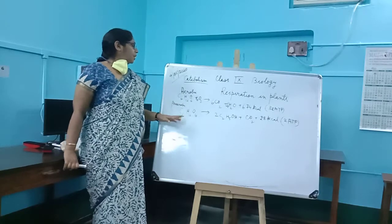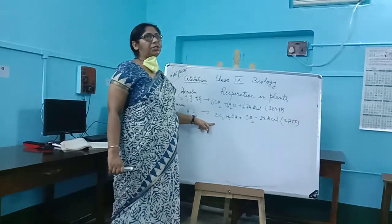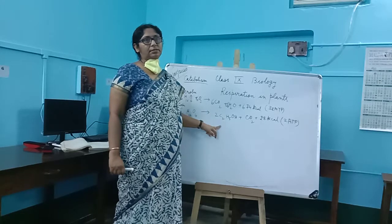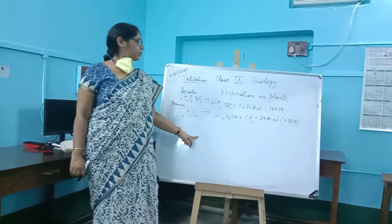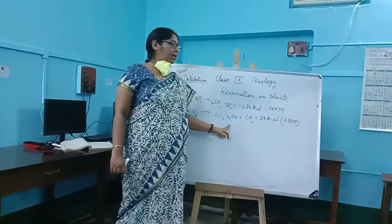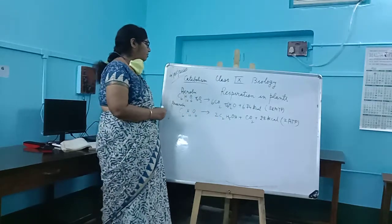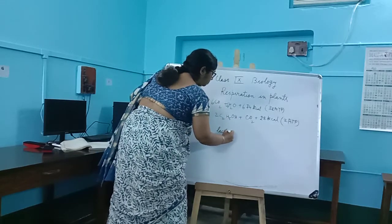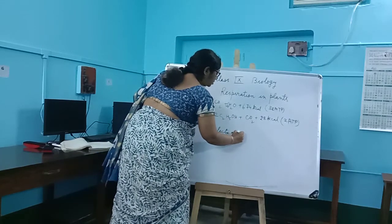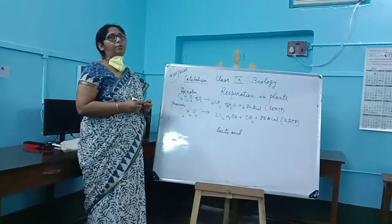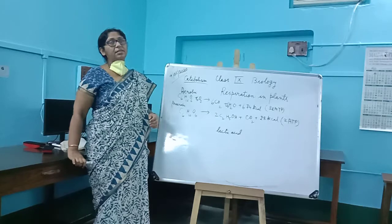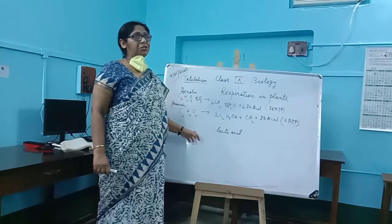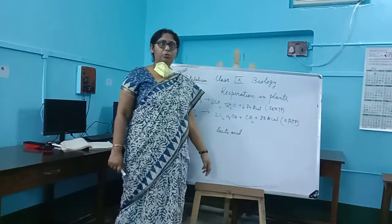The product C2H5OH (ethyl alcohol) is formed in the case of plants during anaerobic respiration. In the case of animals, in place of ethyl alcohol, lactic acid is formed during anaerobic respiration. Also keep in mind that in anaerobic respiration in animals, carbon dioxide is not formed.